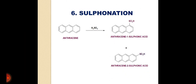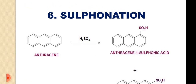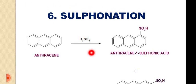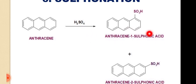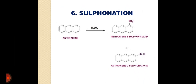The next reaction is the sulfonation reaction, which is quite different. Anthracene on reaction with sulfuric acid undergoes the classical sulfonation reaction, which is an example of electrophilic aromatic substitution. The products obtained are anthracene-1-sulfonic acid and anthracene-2-sulfonic acid, with the SO₃H group attached at the first or second position of the benzene ring.